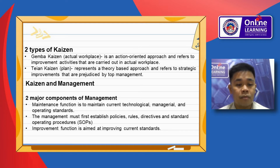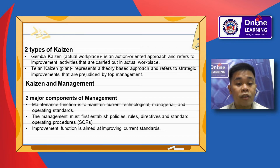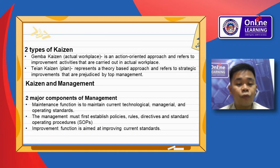Kaizen and management. There are two major components of management. Maintenance involves maintaining current technological, managerial, and operating standards. Management must first establish policies, rules, directives, standards, and operating procedures. The improvement function is aimed at improving the current standard.